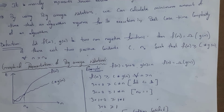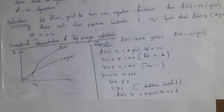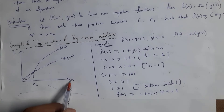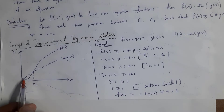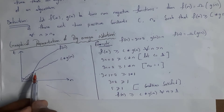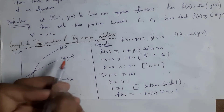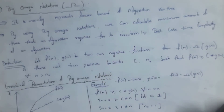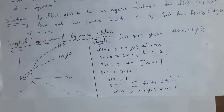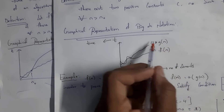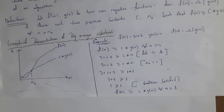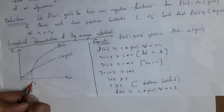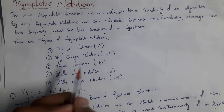So f(n) ≥ c·g(n) for every n greater than n₀. This is the graphical representation of Big Omega notation: x-axis represents number of elements, y-axis represents time. Two lines pass from the center — f(n) is the upper line and c·g(n) is in the lower position, because Big Omega represents the lower bound. The point where these two lines meet is known as n₀ where n is greater than n₀.